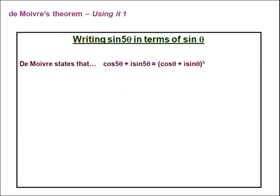We are going to look at two examples. Here is the first: writing sin(5θ) in terms of sin(θ). De Moivre states that cos(5θ) + i·sin(5θ) is the same as (cosθ + i·sinθ) to the power of 5.